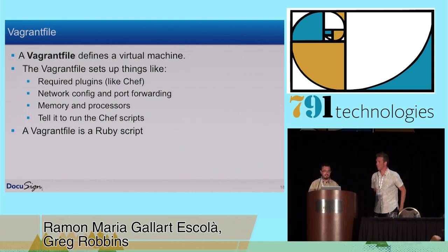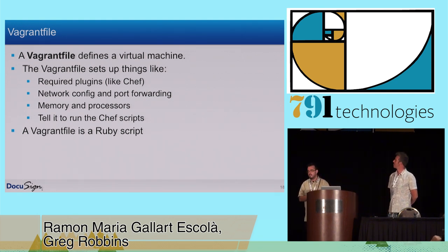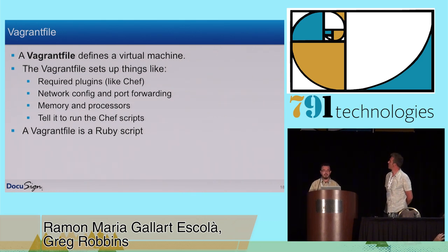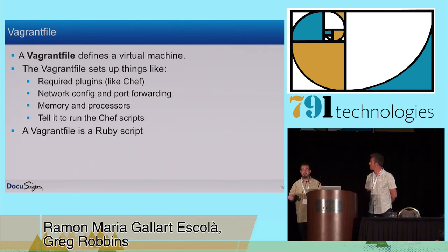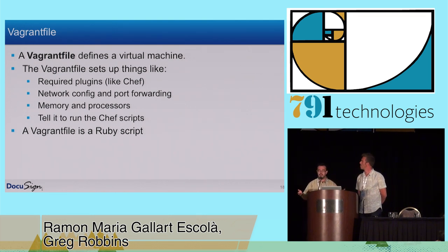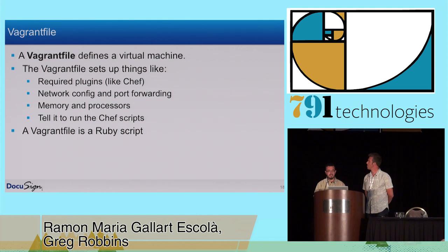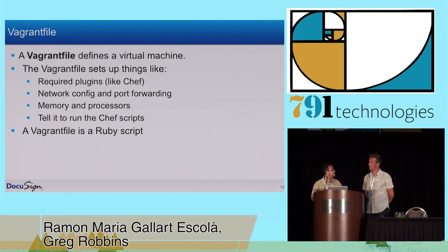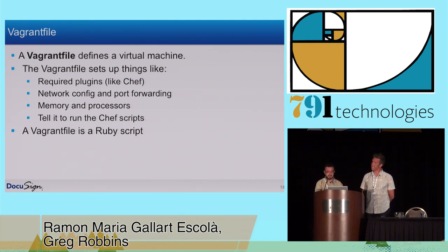So, what is a Vagrantfile? A Vagrantfile just defines a virtual machine. How is a virtual machine defined? By putting the required plugins you may have installed for Vagrant, saying how you want the network configuration for your virtual machine, the processors — whatever you can define in VirtualBox you can define in a Vagrantfile script. And to sum it up, a Vagrantfile is a Ruby script, so you can use all the power of Ruby just for that file.